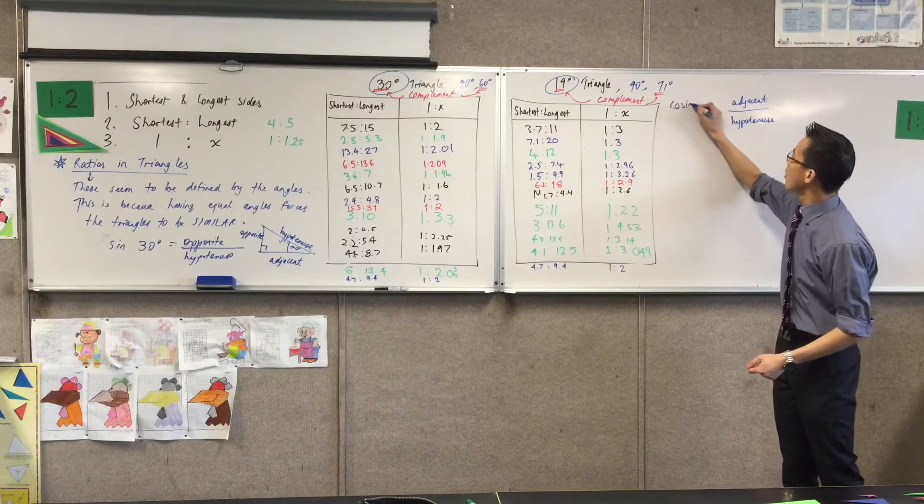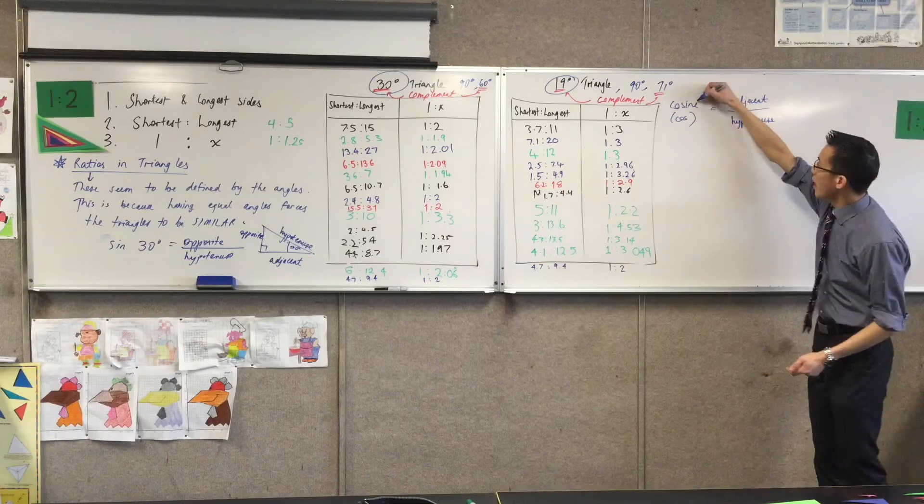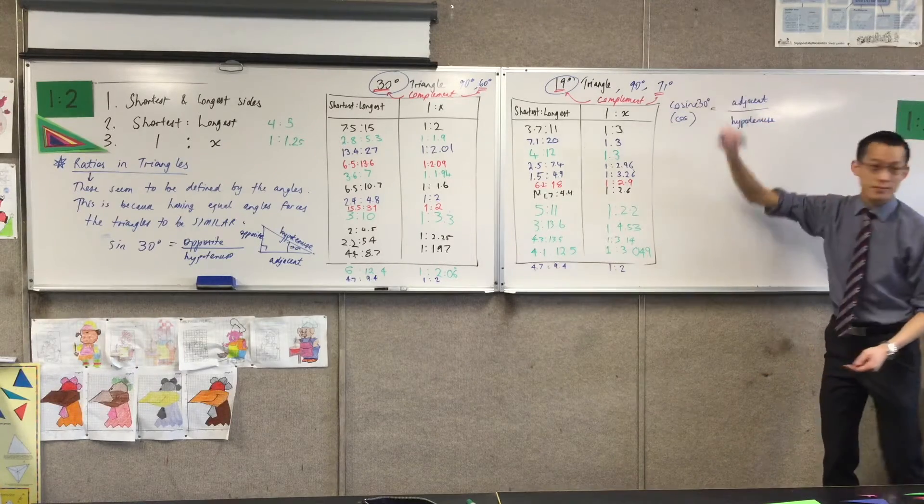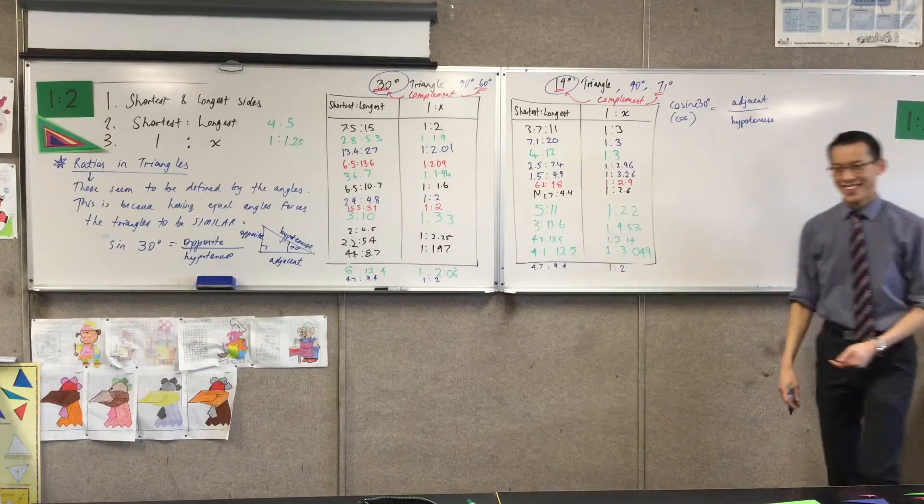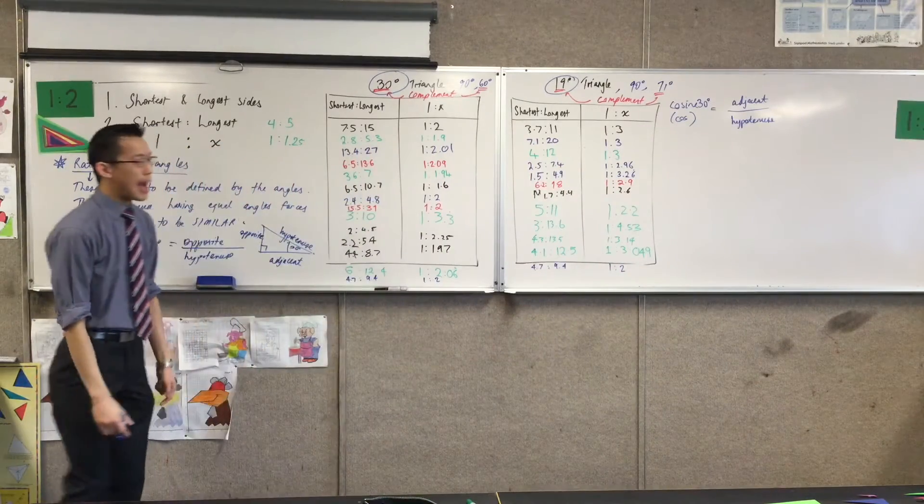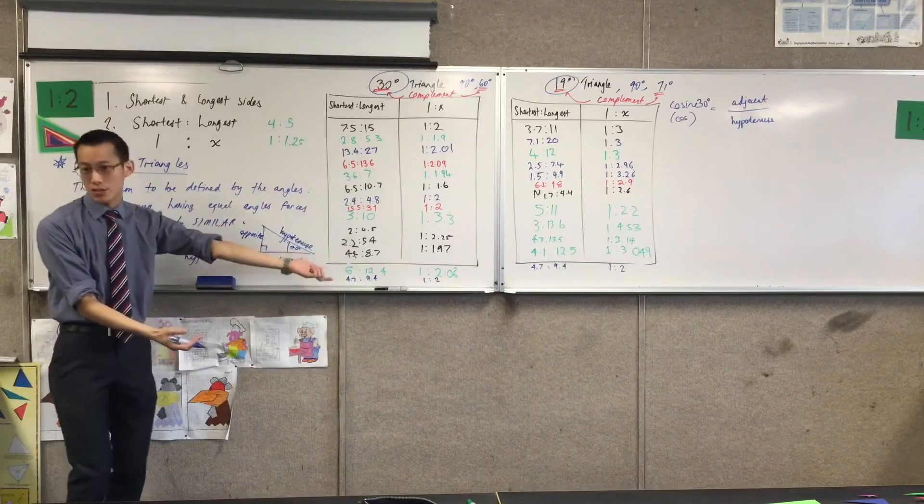And again, because we want to abbreviate, we call it cos. It relates to an angle. Cos, cosine. And it has to be attached to which angle you're interested in.